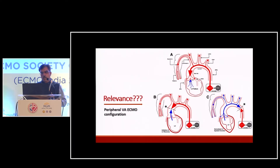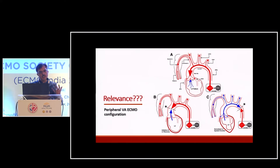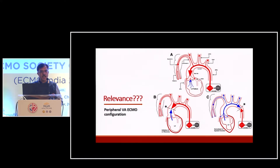As flow in peripheral VA ECMO increases, there is an increase in afterload which leads to reduced LV contractility and LV distension. The literature suggests that failure to recognize, anticipate and treat LV distension and failing to unload the left ventricle has grave consequences. So whenever it is distended, it has to be unloaded.